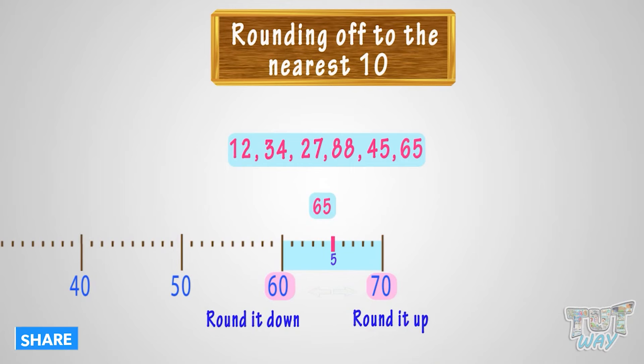Think, which option do you think is more apt? Here, 65 is midway between 60 and 70, or it is on the 5 mark. What do we do now? 65 is 5 numbers away from 60 and 5 numbers away from 70.